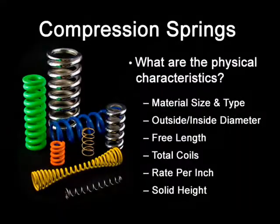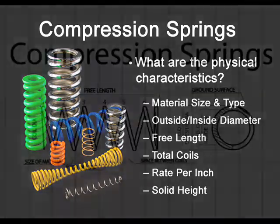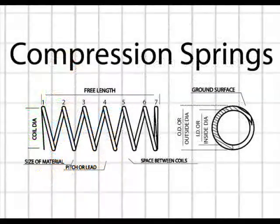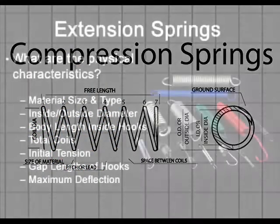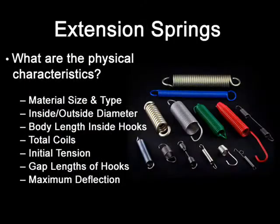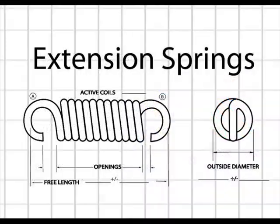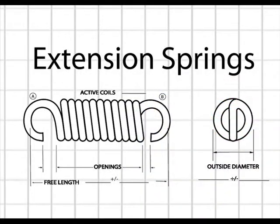Compression springs have the most common spring configuration. They are used to resist applied force or to store energy in a pushing motion. Extension springs store energy and exert a pulling force. They are usually made from round wire and are close wound with initial tension.